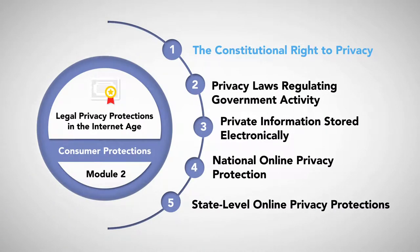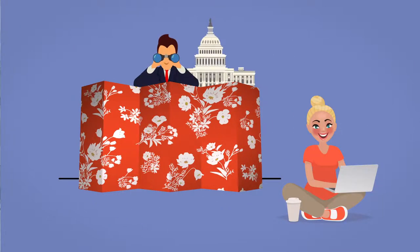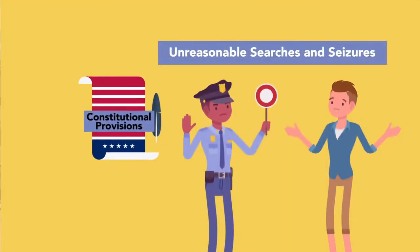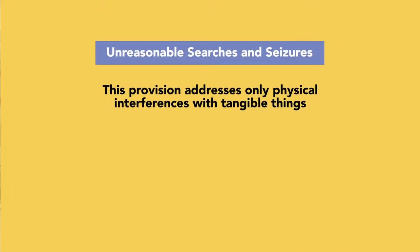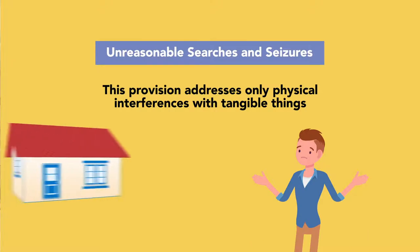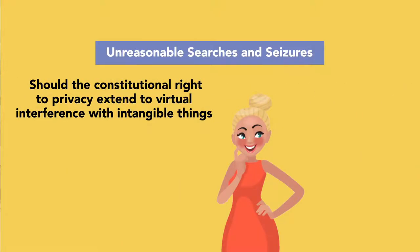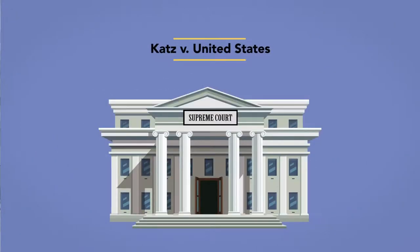The constitutional right to privacy against government interference stems from various constitutional provisions — most importantly the protection against unreasonable searches and seizures in the Fourth Amendment. However, this provision addresses only physical interferences with tangible things, specifically persons, houses, papers, and effects. This leaves open the question of whether the constitutional right to privacy should extend to virtual interference with intangible things like private communications and personal data.